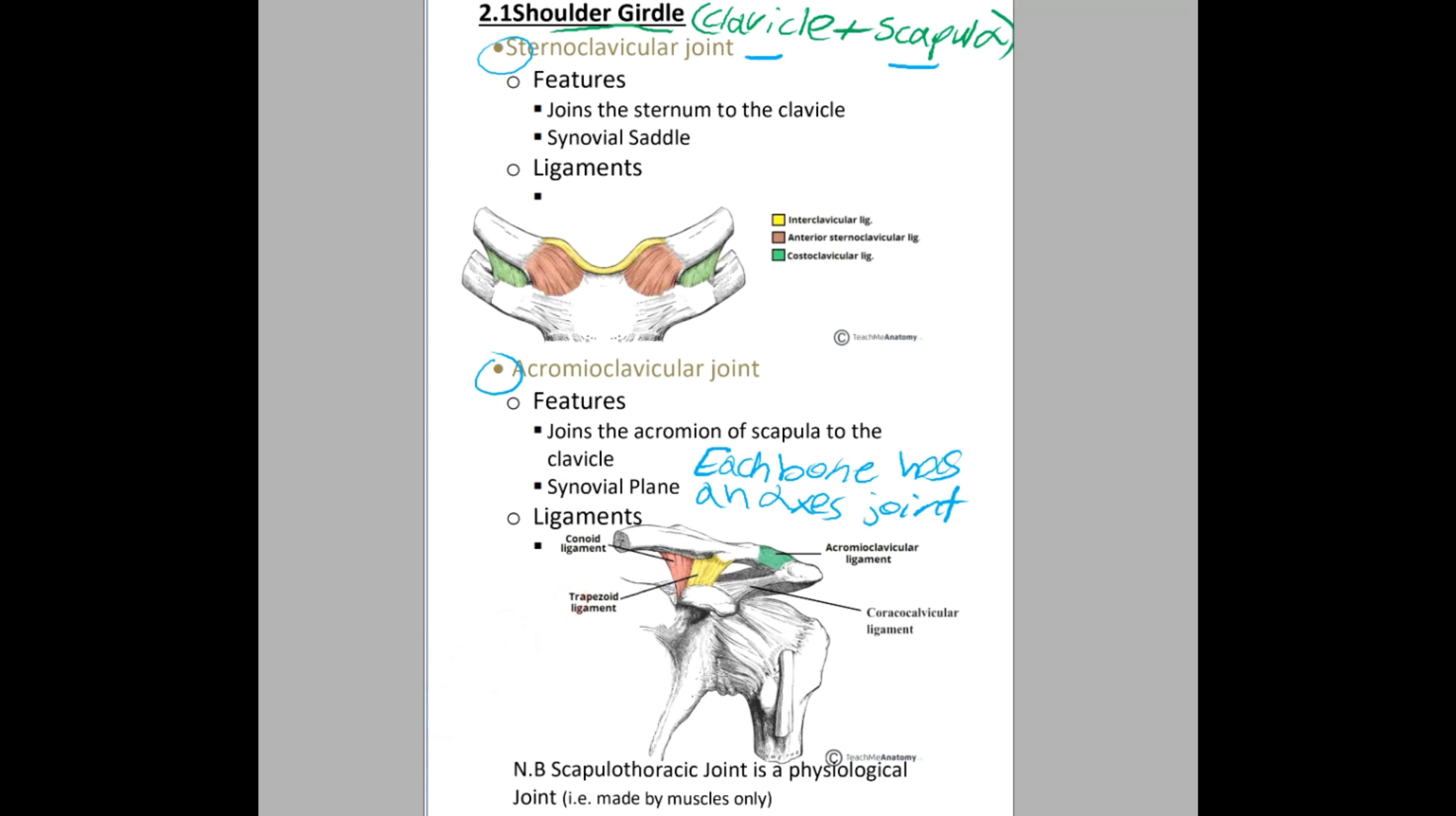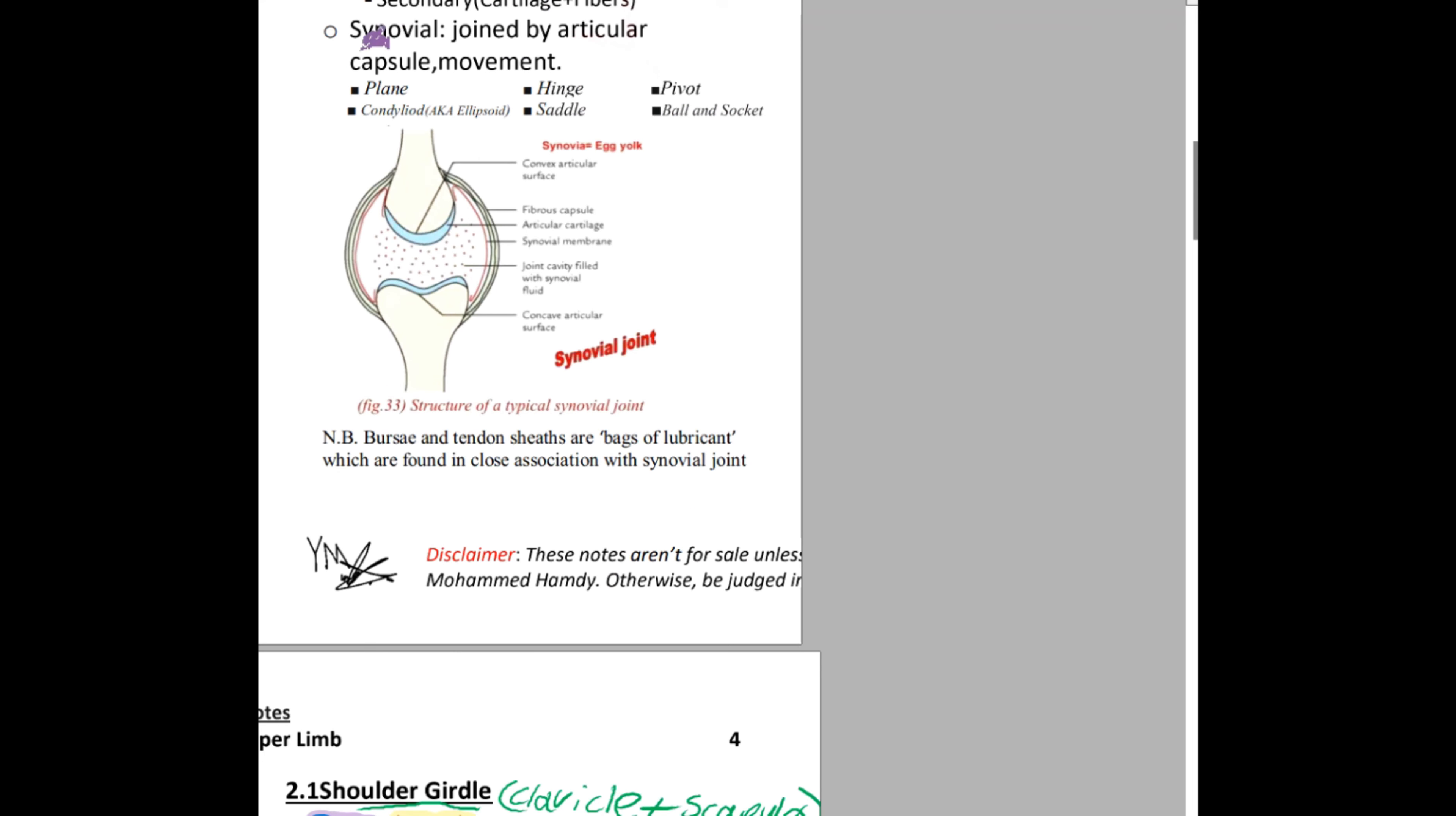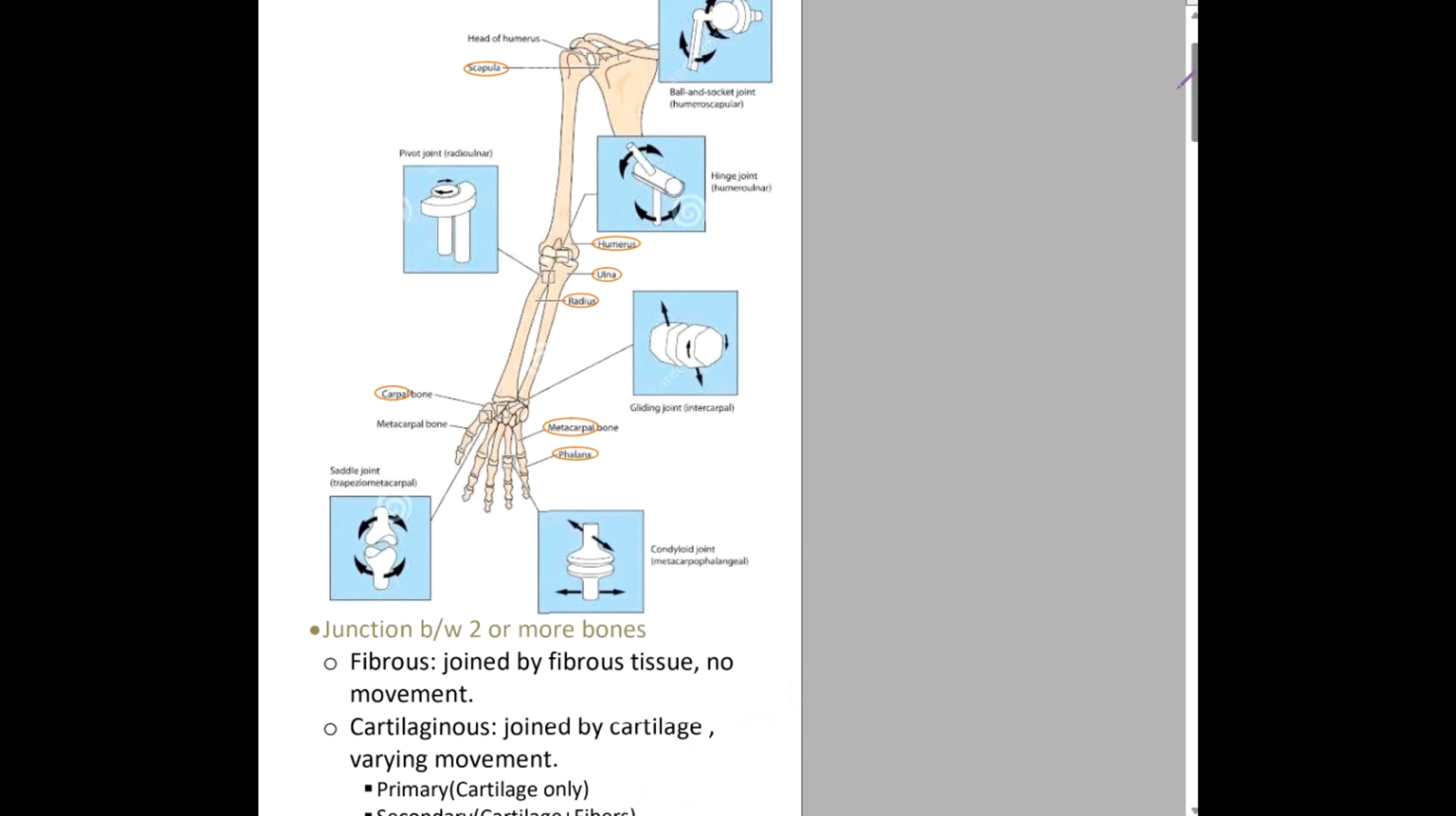For example, the clavicle moves over the axis of the sternoclavicular joint. The easiest example of this is the humerus which moves over the shoulder joint. Anyway, the sternoclavicular joint is joined by the sternum and the clavicle and its type is synovial saddle. Synovial as written in yum notes means it's joined by articular capsule, and saddle means its shape is like the saddle of the horse.